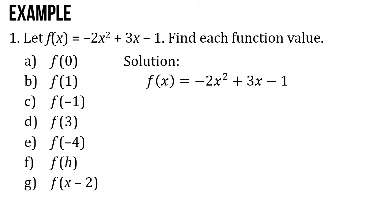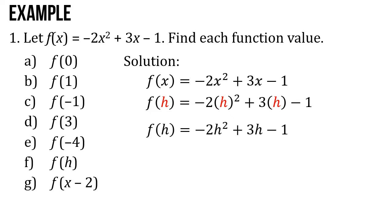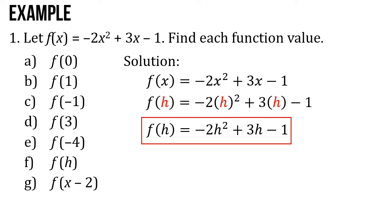We can also evaluate the function if we change the variable. For example, if x is equal to h, then f of h is equal to negative 2h squared plus 3h minus 1. So that's it — it's like we just change x to h.